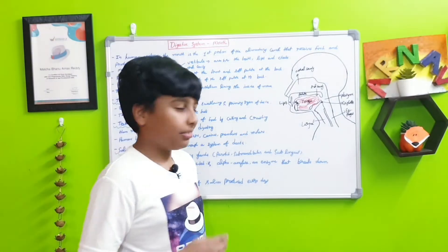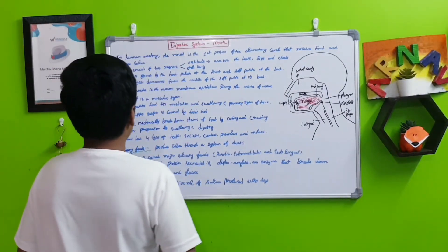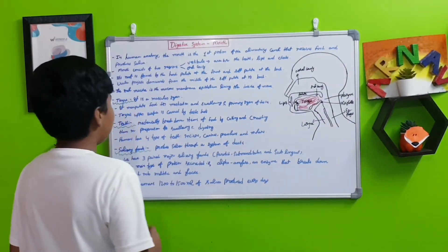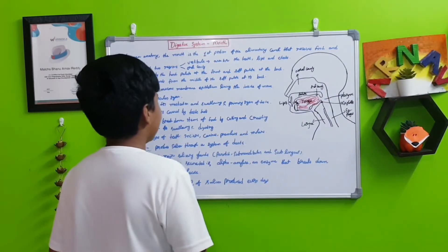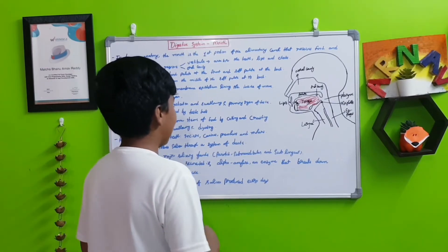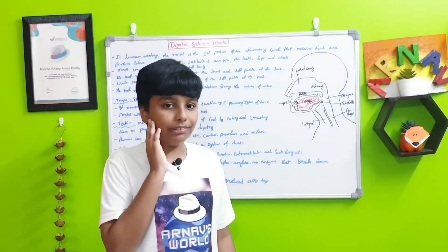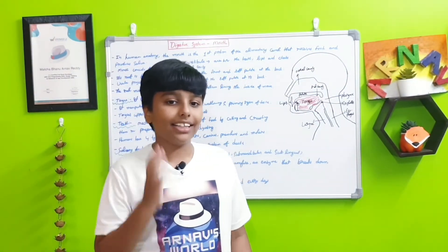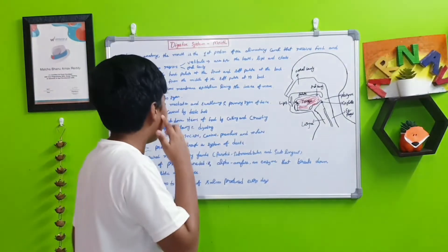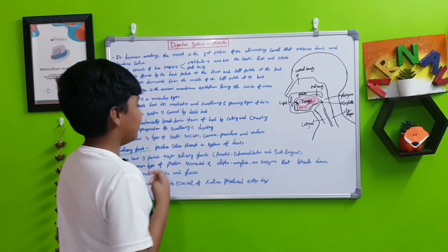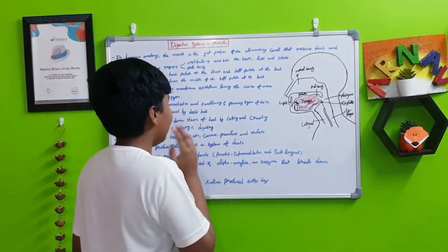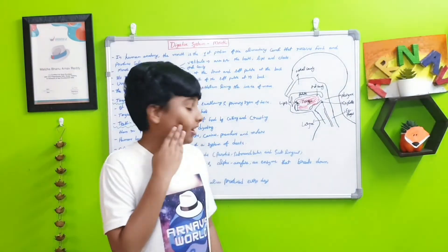Finally, the salivary glands. These produce saliva through a system of ducts. We have three major salivary glands: the parotid glands, which are the largest salivary glands, approximately over here on my body; next the submandibular, down of the tongue; and then the sublingual, which is just next to the submandibular.